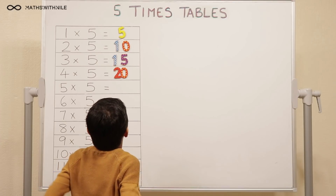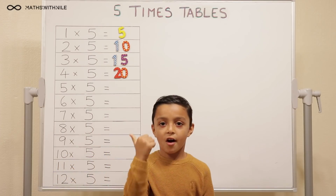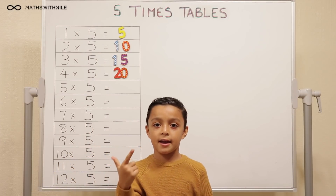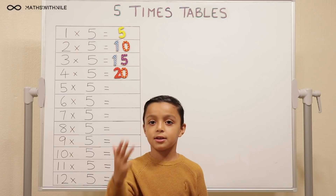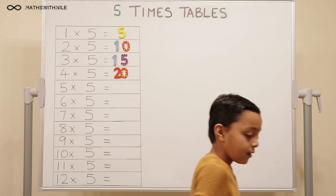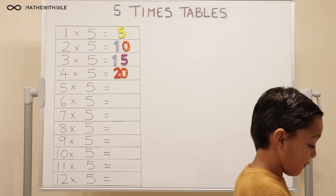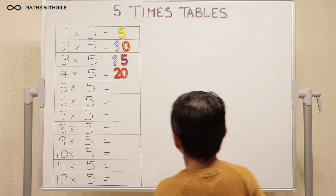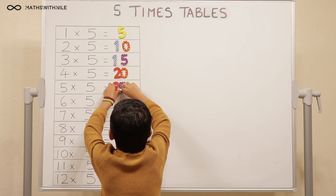Now we're doing five times five. Five, ten, fifteen, twenty, twenty-five. Twenty-five.